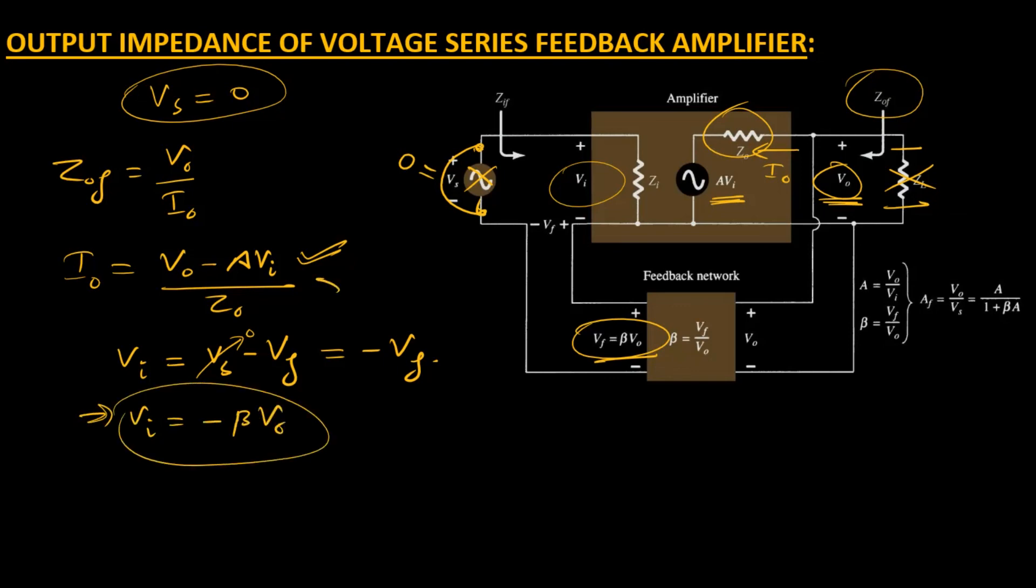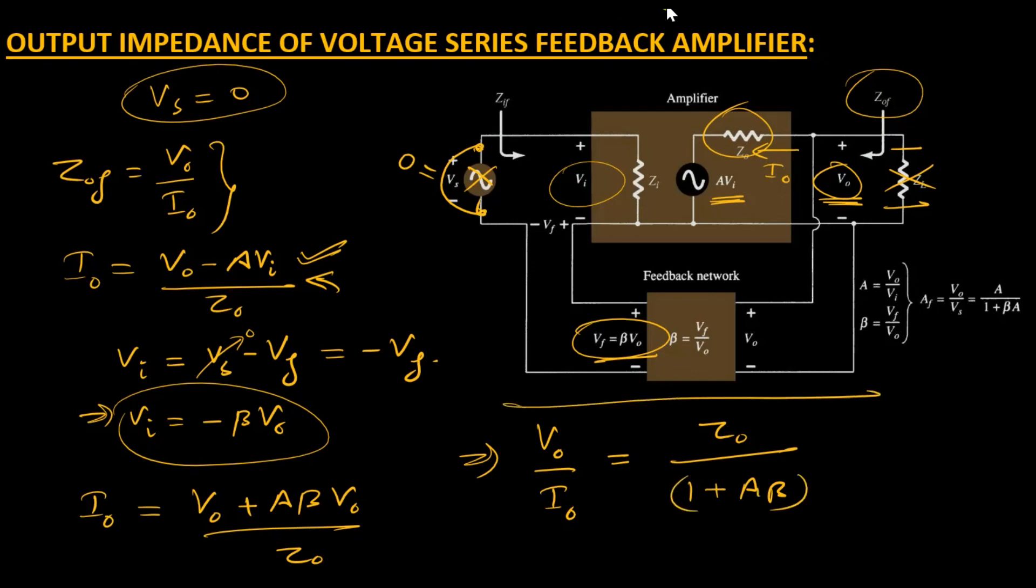Substituting this in the equation above, current I0 becomes V0 plus A·beta·V0 over Z0. Rearranging the equation, taking V0 common and dividing by I0, this equals Z0 over 1 plus A·beta. This is the final feedback value, or Zof - the output feedback impedance. From here we can conclude that having a voltage feedback arrangement reduces output impedance by a factor 1 plus A·beta, the same amount by which input impedance was raised.